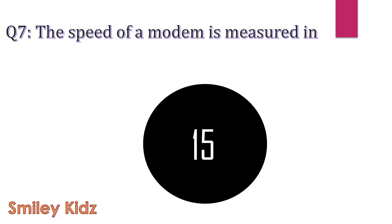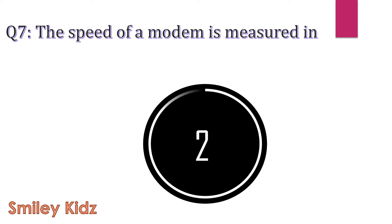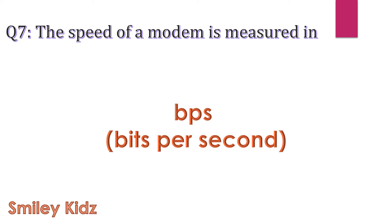Question number 7. The speed of a modem is measured in... The correct answer is BPS, bits per second. The speed of a modem is measured in BPS, which means bits per second.